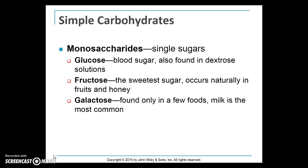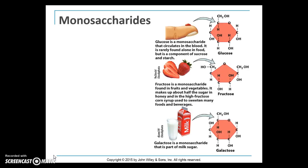Glucose, often called blood sugar, is the most important carbohydrate fuel for the human body. Fructose is the sweetest sugar and occurs naturally in fruits and honey. Galactose is found in only a few foods — milk is the most common.